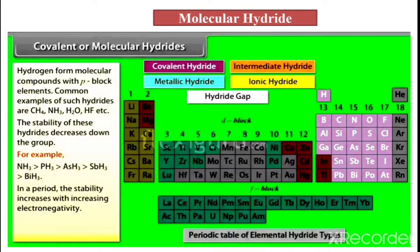To summarize molecular hydrides: hydrogen forms compounds with P-block elements — examples such as CH4, NH3, H2O, and HF — these are called molecular hydrides. Regarding stability: in a group, stability decreases down the group; in a period, stability increases with increasing electronegativity.